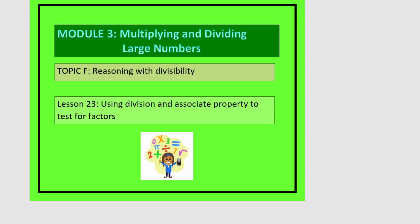This is lesson 23 in module 3. In this lesson, we'll be using division and the associative property to test for factors.